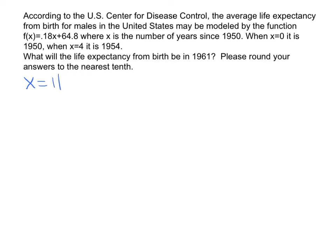All we're going to do is take this initial equation and determine the life expectancy of the male if X were to equal 11. I'm going to plug in 11 for X. So I'll rewrite my initial equation: F of X is equal to 0.18X plus 64.8. This is my initial equation — I didn't change it at all.